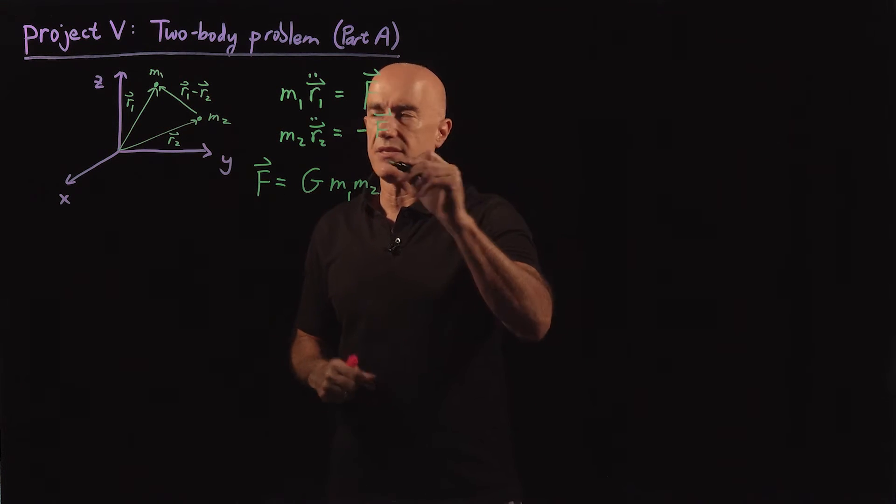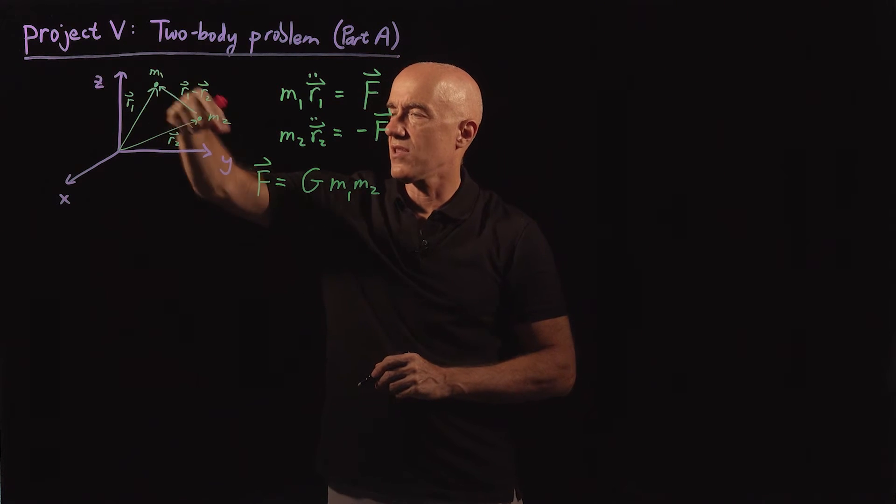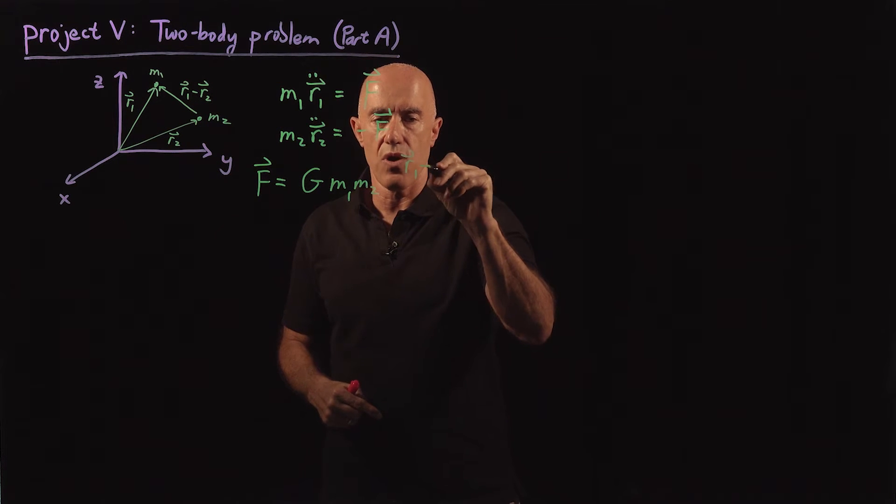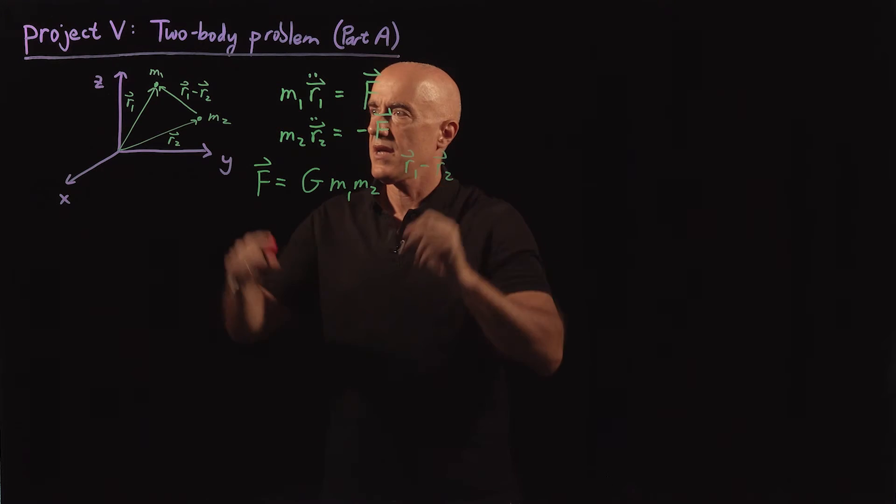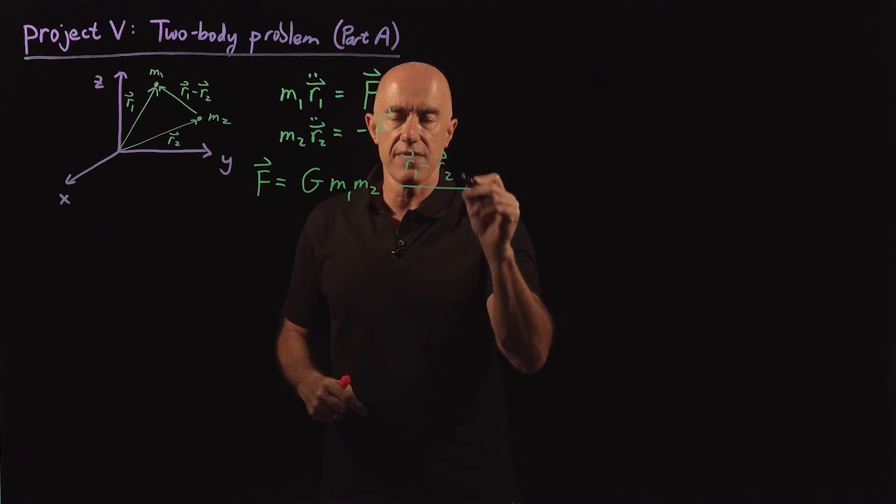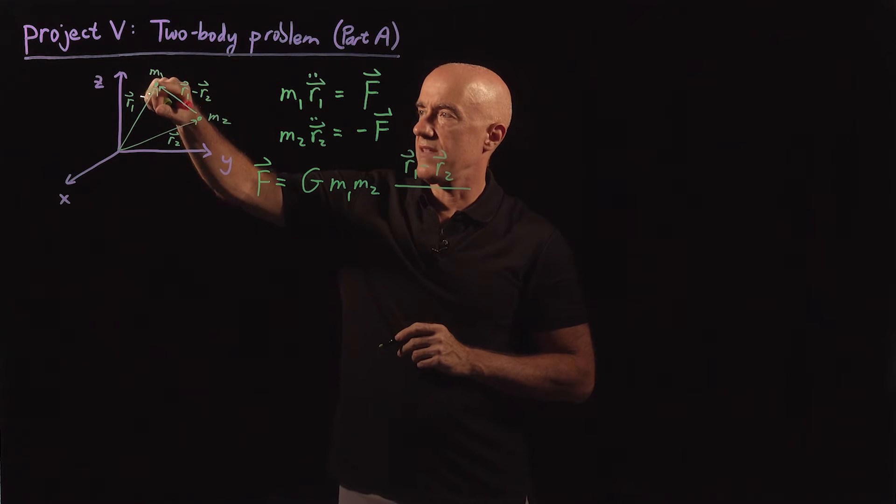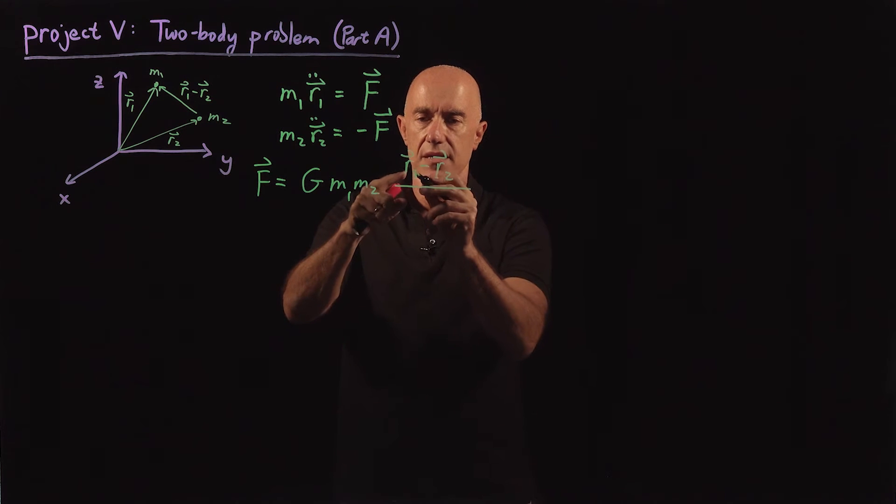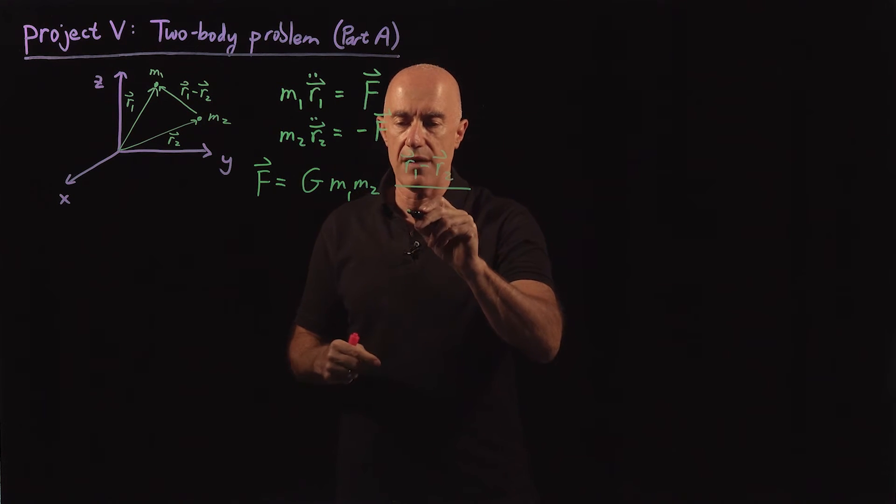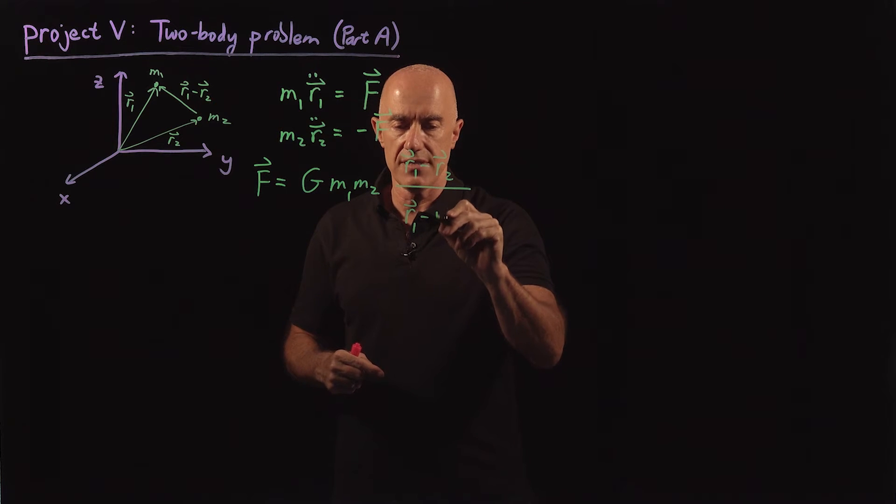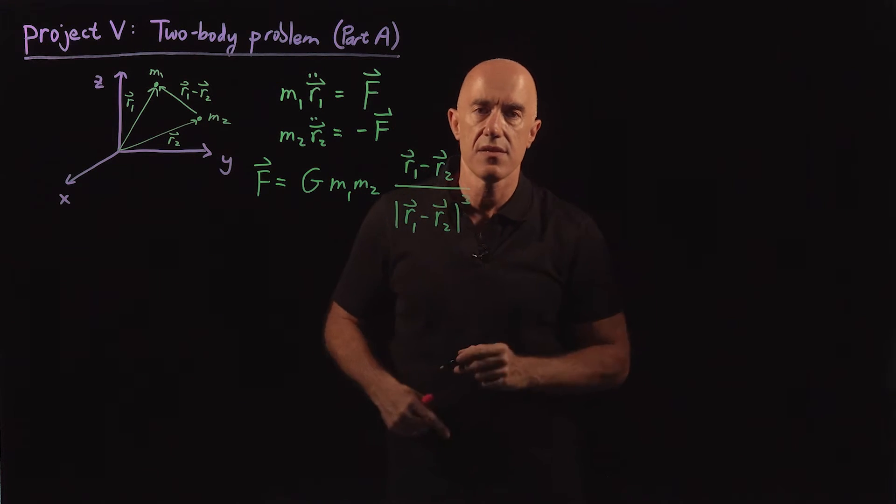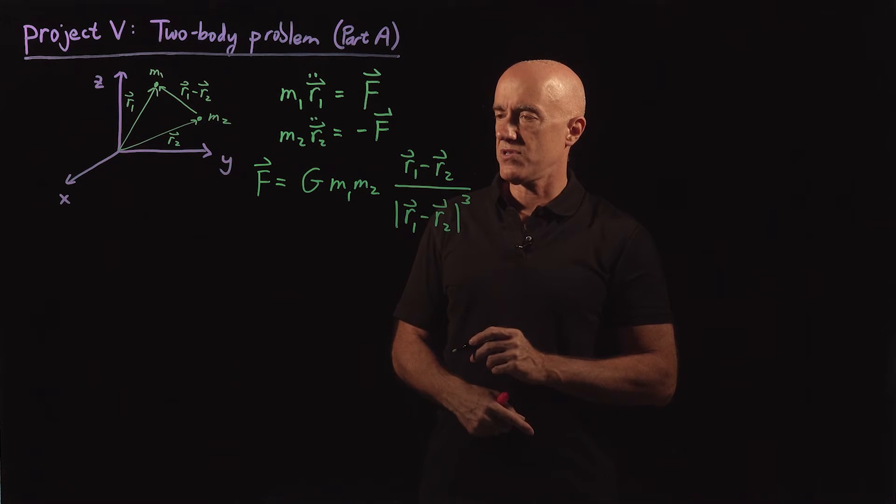It also lies on, it's a vector force along the direction connecting the two masses. So the vector we can write as r1 minus r2 as shown on this diagram. And it's an inverse square law, so it's inversely proportional to the square of the distance between the two masses. Because we have an r1 minus r2 in the denominator, and then in the numerator we would have the distance here, r1 minus r2 absolute value, and then cubed, or modulus cubed in the denominator. So this represents an inverse square law.